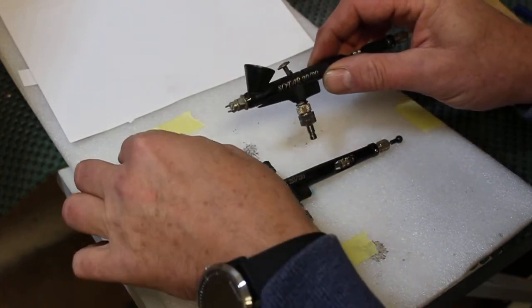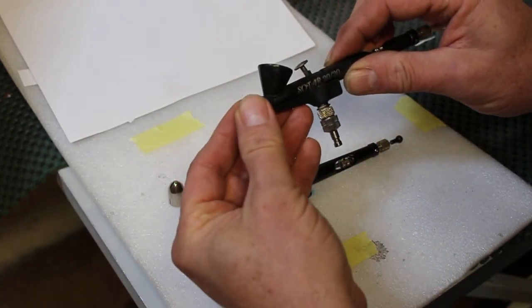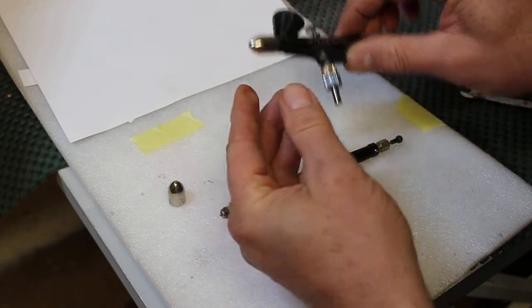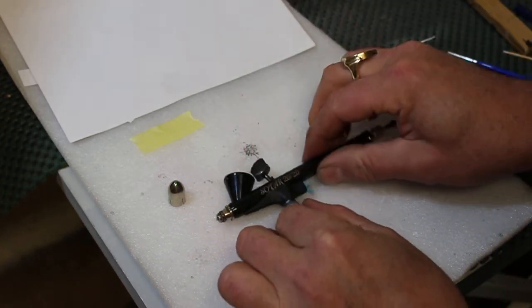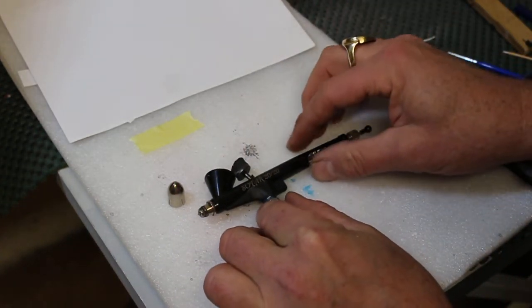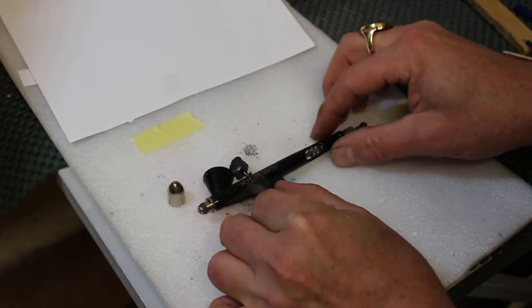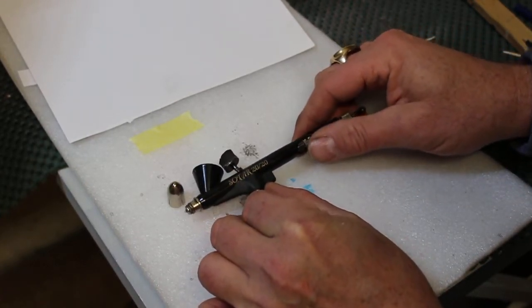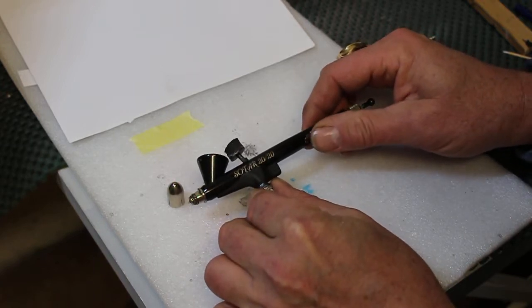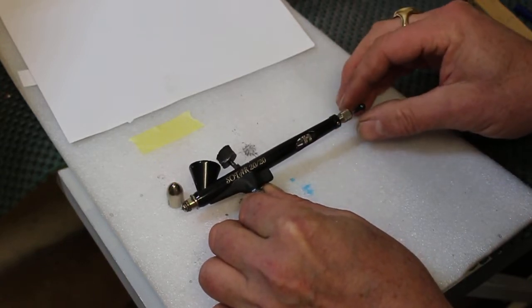But the large one I don't use that often, so I'm going to put that to one side because this is the one that we're going to use. We're going to change over. So with the Sotar, to get that needle out of the way, we just open the chuck there, bring the needle back.